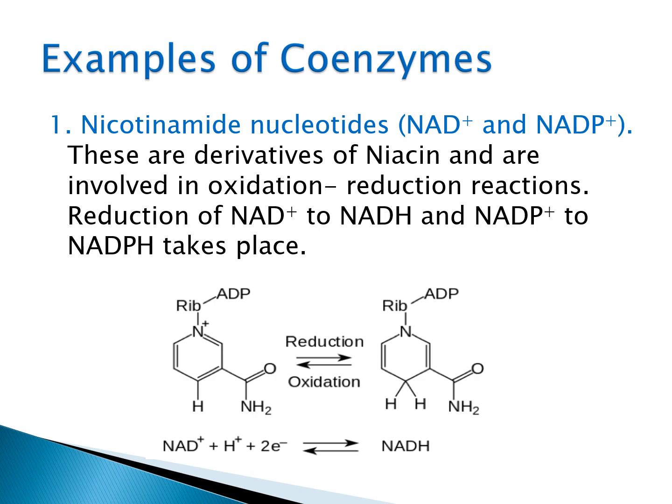Examples of coenzymes: The first is nicotinamide nucleotide — NAD+ and NADP+ forms — which are derivatives of niacin and are mostly involved in oxidation-reduction reactions. NAD+ is reduced to NADH, and NADP+ is reduced to NADPH, while the reverse is the oxidation reaction of NADH.